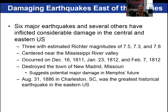When you think of earthquakes in the United States, you may think they only occur in California and west of the Rockies. However, six major earthquakes occurred in the past with magnitudes of 7.5, 7.3, and 7.8, centered near the Mississippi River Valley along the New Madrid fault zone. They occurred in the winter of 1811 and 1812. On August 31st, 1886, Charleston, South Carolina experienced the greatest historical earthquake in the eastern United States. There are major faults in the central and eastern parts of the United States.